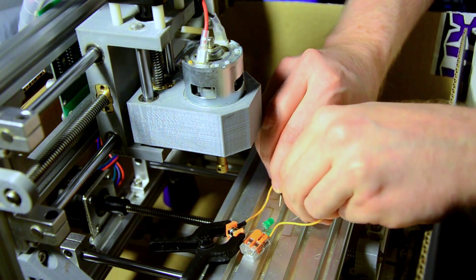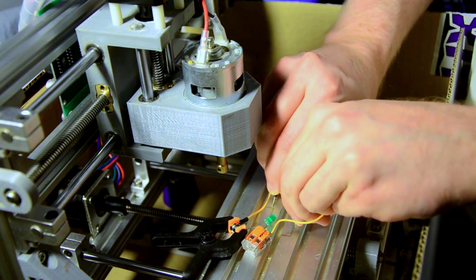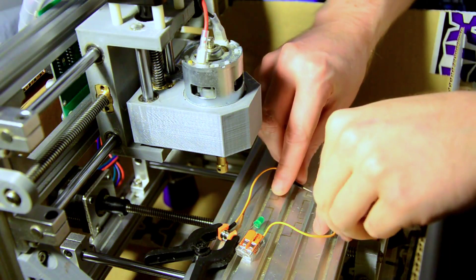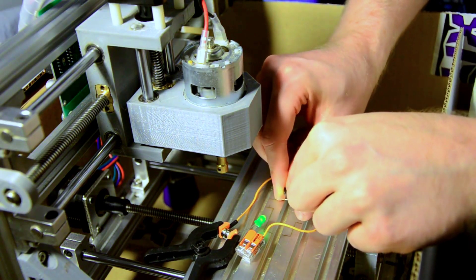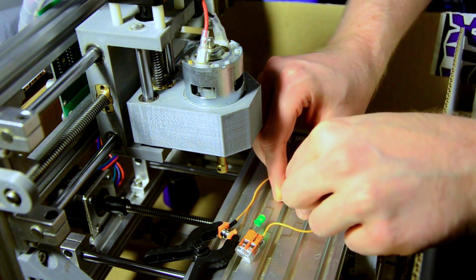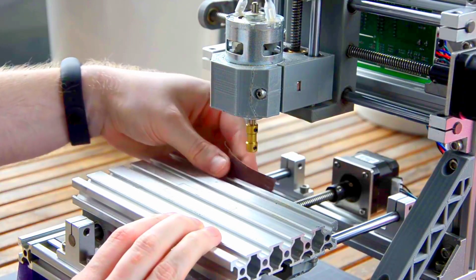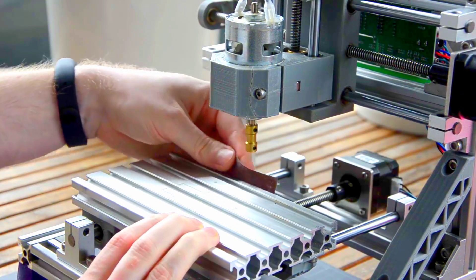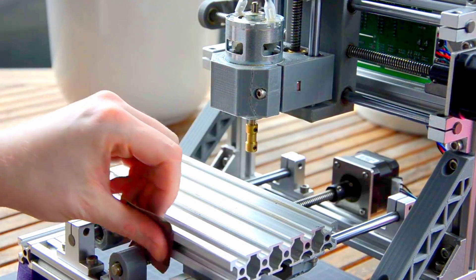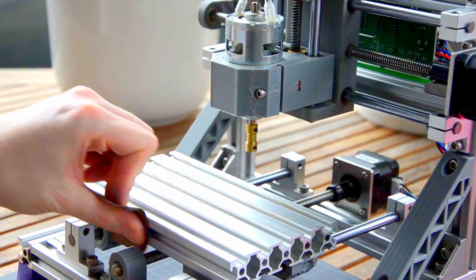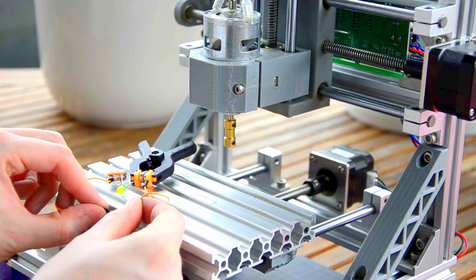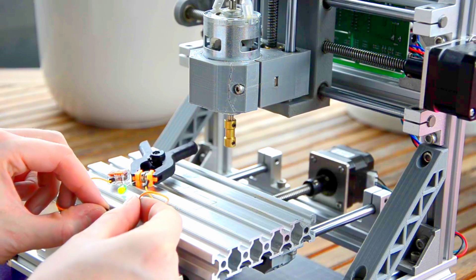But unfortunately, aluminum isn't electrically conductive. The extrusion is actually laminated, but it's only a thin layer, so we'll remove it with fine grit sandpaper. Now it works, but we'll need to know the dimensions of the table.